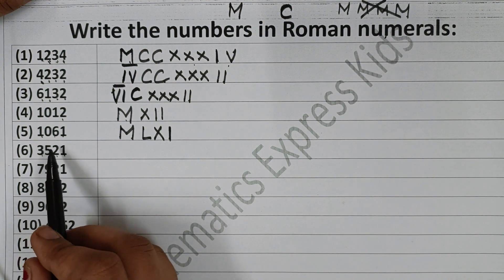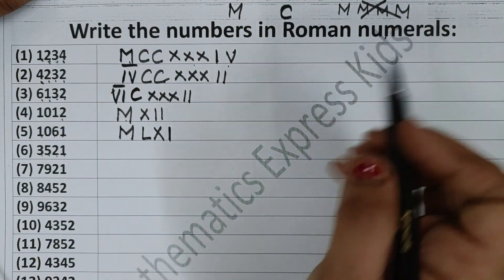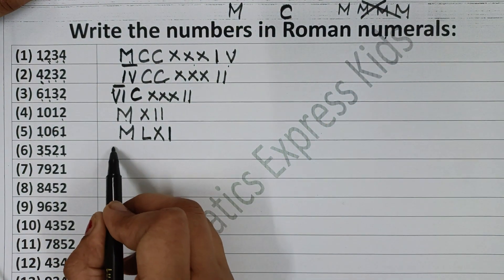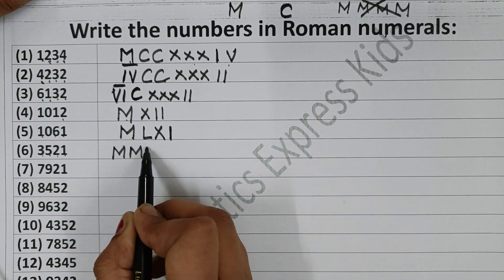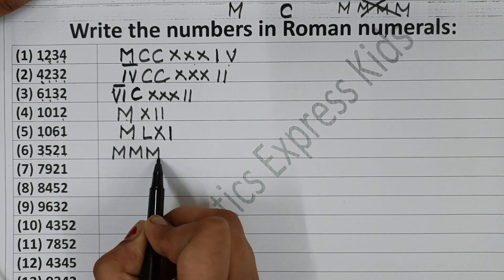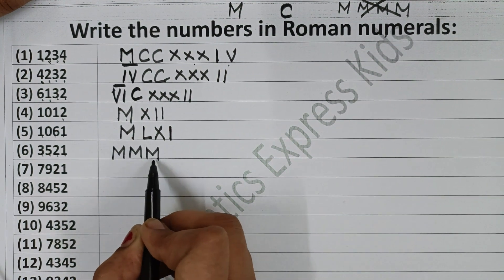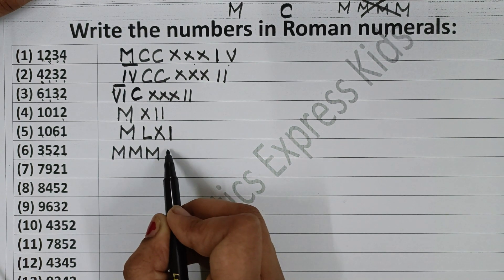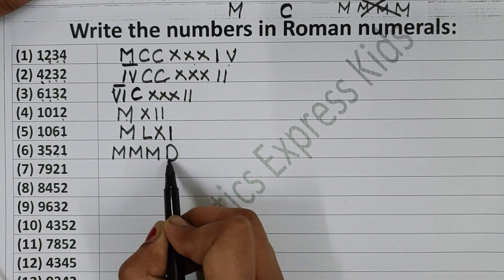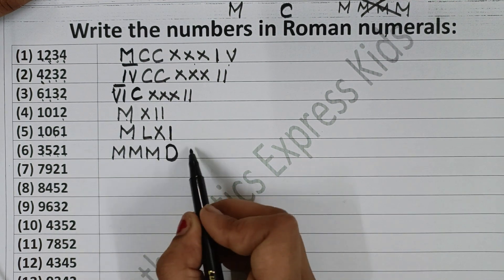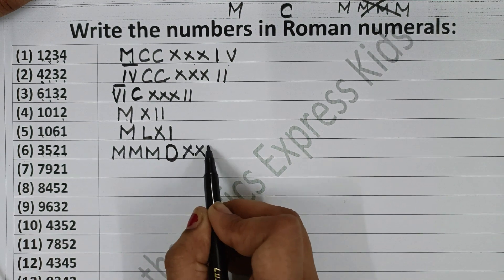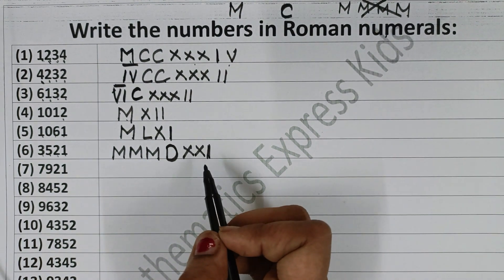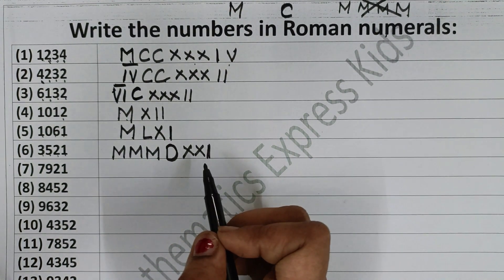Now 3521. How do you write 3000? Write M three times: MMM. This is 3000. Then 500 is D. Then 21: 20 is XX and 1 is I. So 3521 is MMMDXXI. I hope this is clear to you.